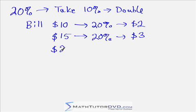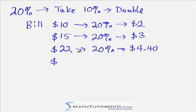Now, what if I have a bill that's $22 and I want to do a 20% tip? Well, first I calculate 10%, so I move the decimal. 10% is $2.20. If I double that, it's going to be $4.40.